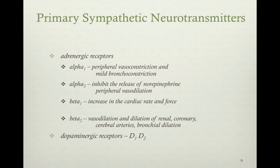Beta-1 causes an increase in cardiac rate and force, meaning the heart beats harder and faster. Beta-2 causes vasodilation in the renal, coronary, and cerebral arteries, as well as bronchial dilation. Smooth muscle dilation occurs whenever beta-2 is stimulated.